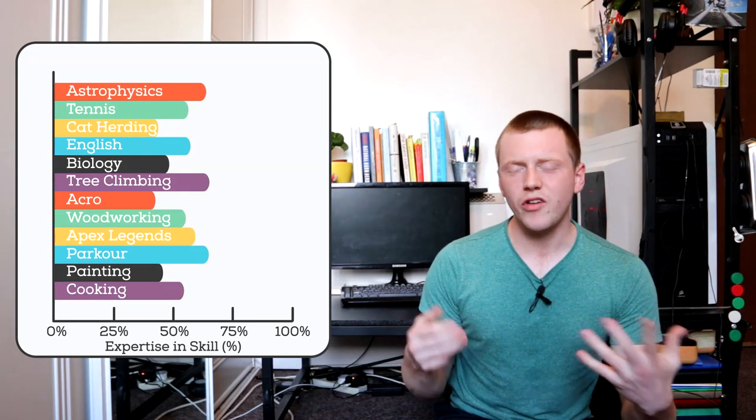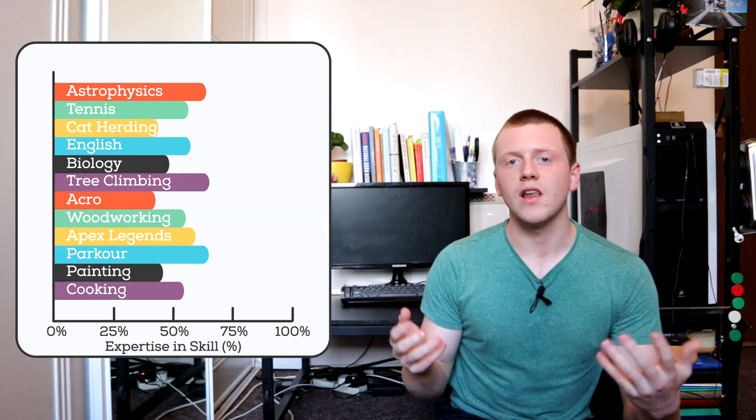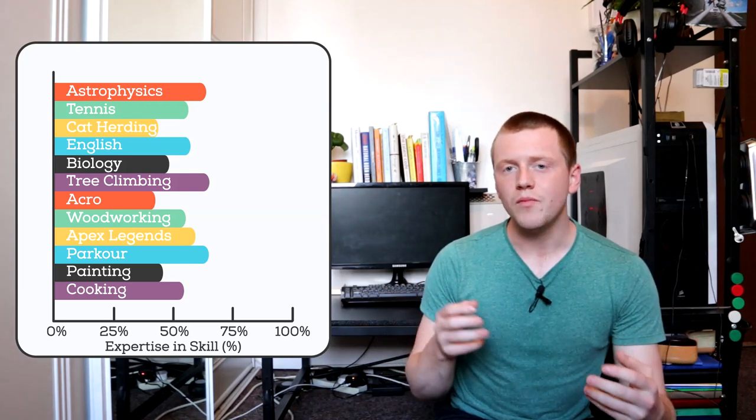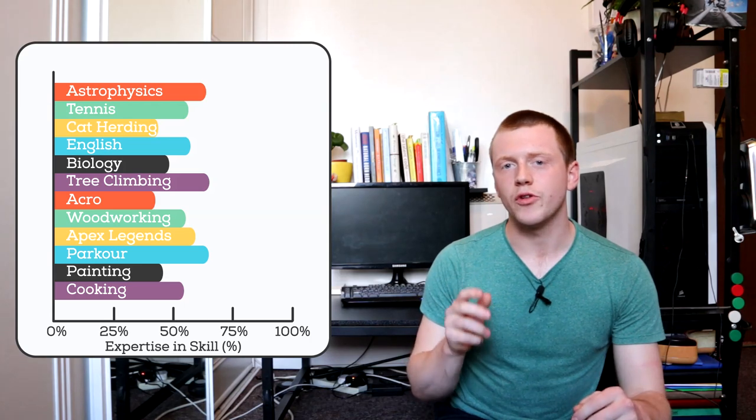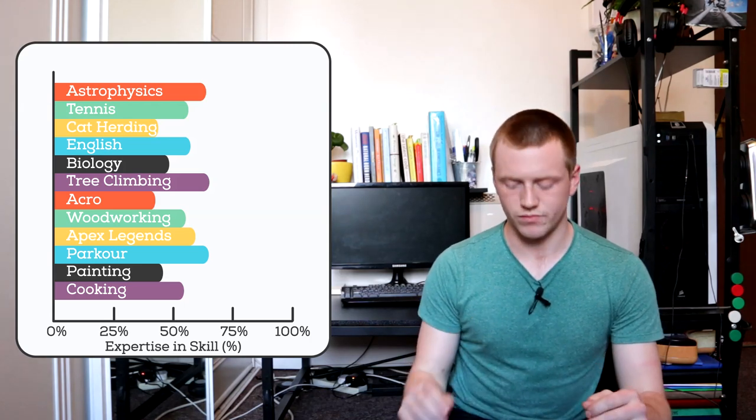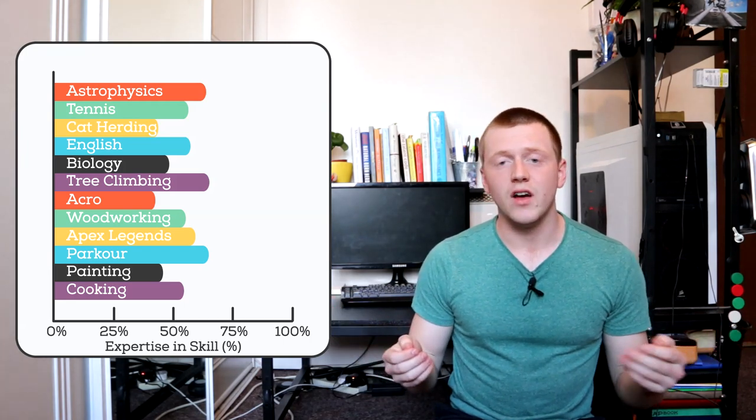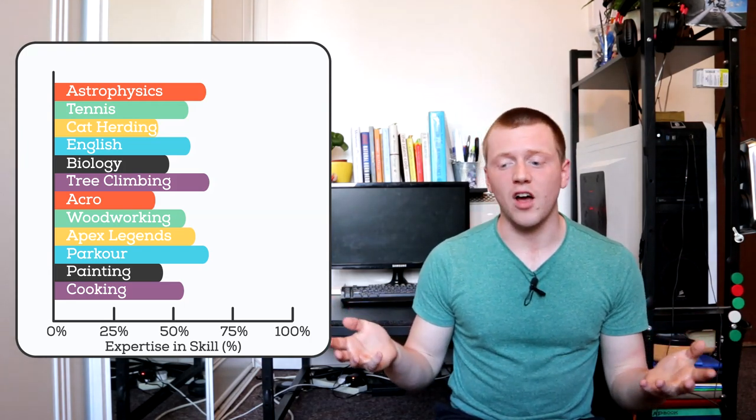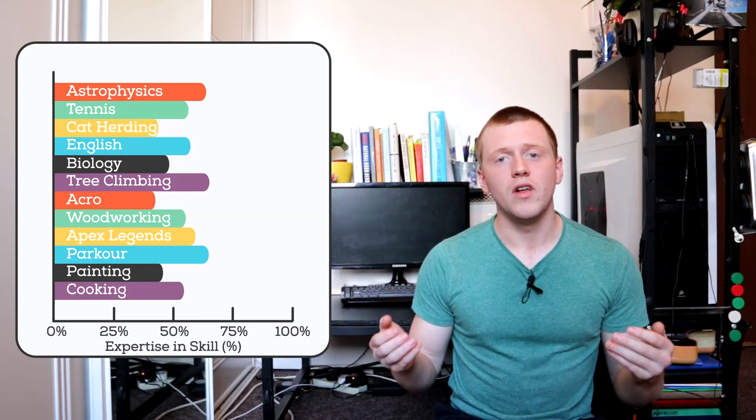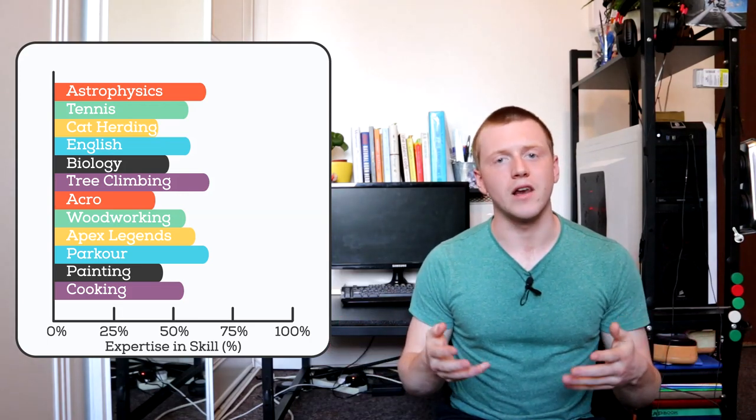Next up is a normal generalist. As you can see their general level is much higher. There isn't much that they can't do to at least some level. They have a few skills that they're better at like potentially tree climbing. And a few skills that they're a bit worse at like herding cats. But in general they're pretty even. They're pretty good at a lot of things. Not incredible but good enough.